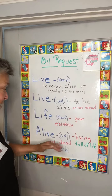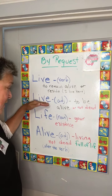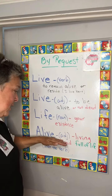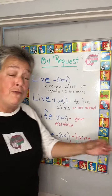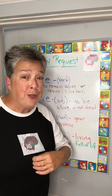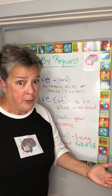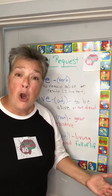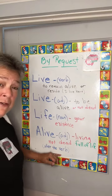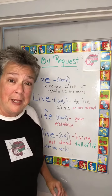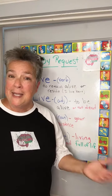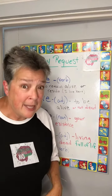Alive is an adjective, just like live is an adjective. But alive means you're living, not dead, or full of life. You can be fully alive in your life while you live. But alive comes after the verb when you're making a sentence — like, is he alive?